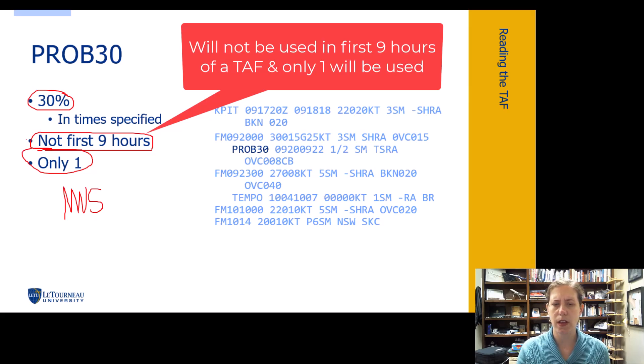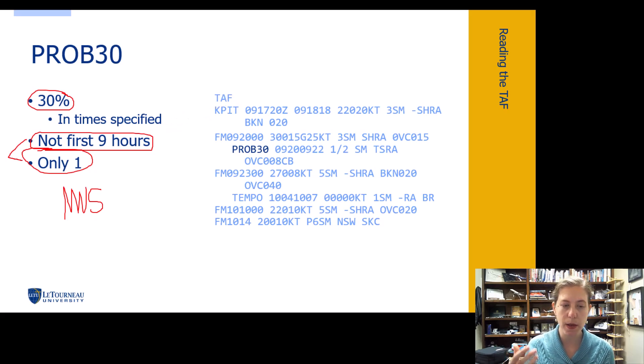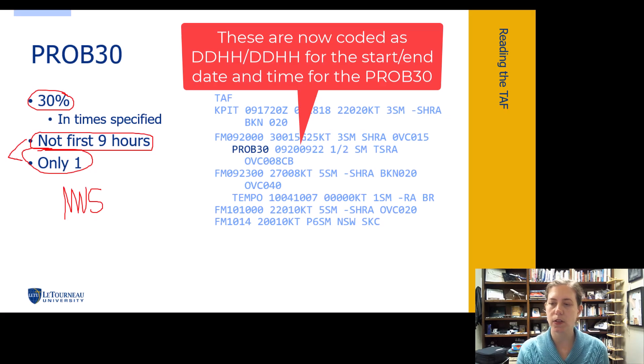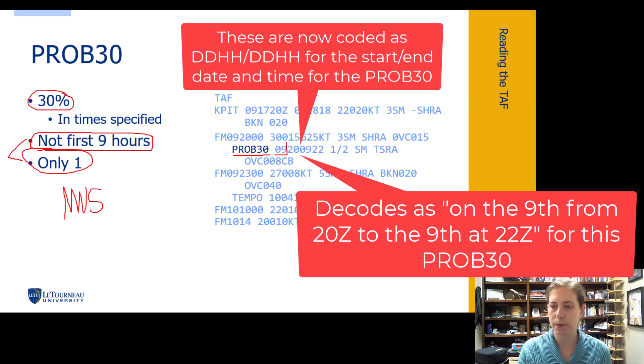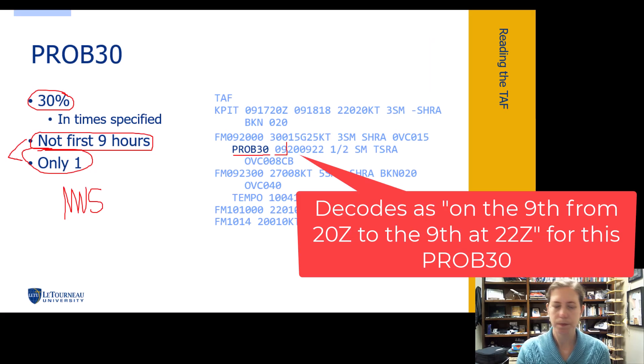Now, I'm not really concerned that you know that it's not in the first nine hours or only that they're only going to use it one time. But just be aware, this is looking at a low probability of something happening. So here we have an example, we've got a PROB30. This tells me on the ninth, we can divide up our times. So on the ninth, from 20 Zulu to the ninth at 22 Zulu, this is when we are expecting this to possibly happen. Again, they're saying it's only, this is a 30% chance of something happening.